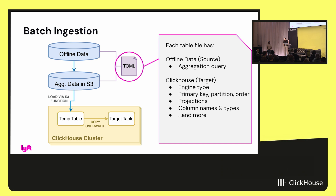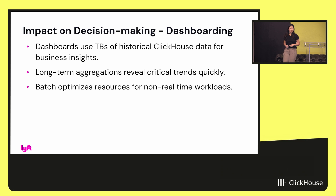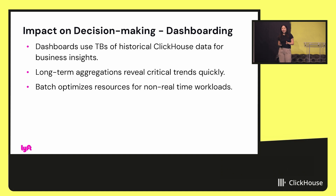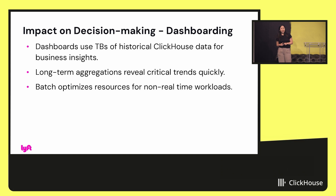From the ClickHouse side, it's really nice because you can use the S3 function in ClickHouse — it's super simple to read from whatever S3 bucket you want. We read that into a temp table and swap each partition into our target table. One of our critical use cases is dashboarding: our dashboards use terabytes of historical ClickHouse data for business insights, enabling long-term aggregations that reveal critical trends quickly. Batch ingestion also lets us optimize resources for workloads that don't need to be real-time.